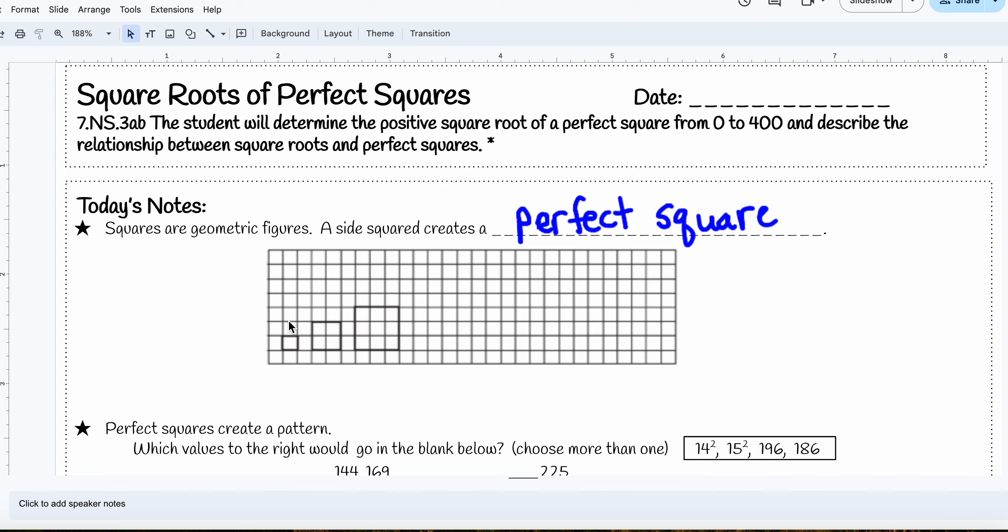For example, if we have a length of one, so each side of this square has a length of one, the area is one.